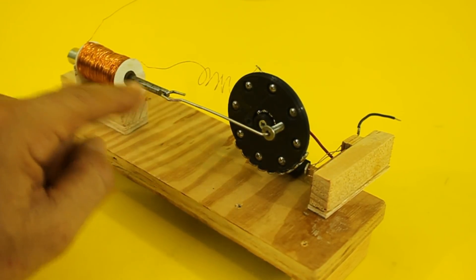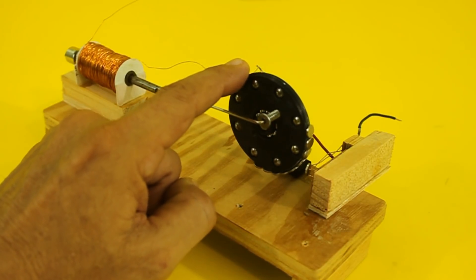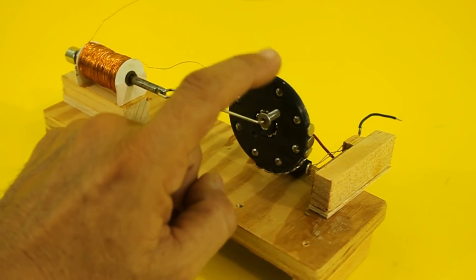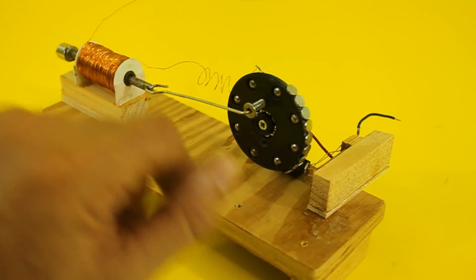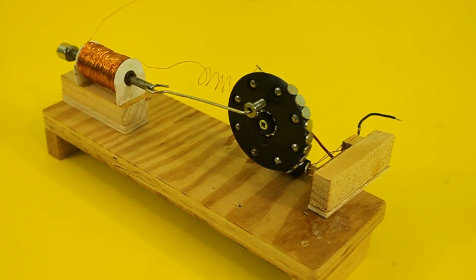The solenoid exerts a force again on the flywheel and it rotates, and this cycle repeats at every turn of the flywheel.